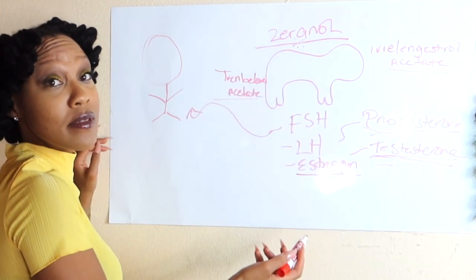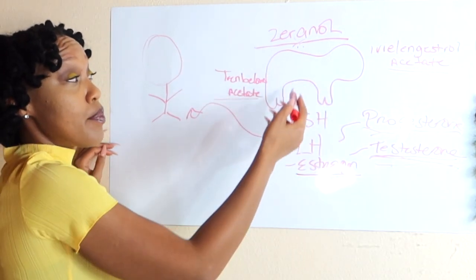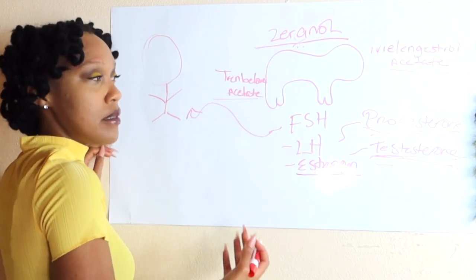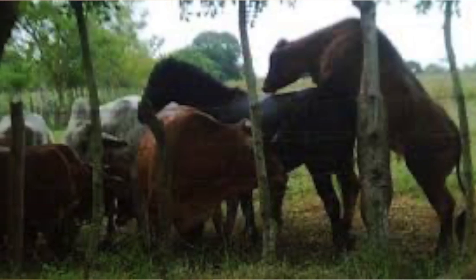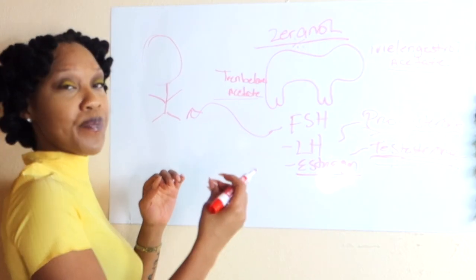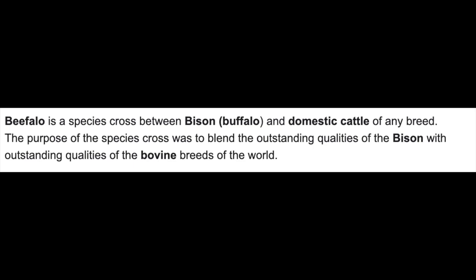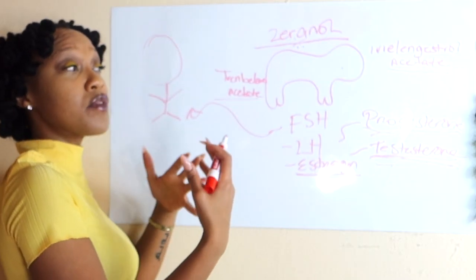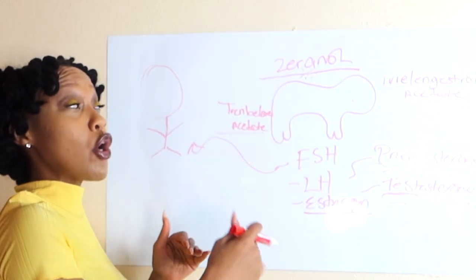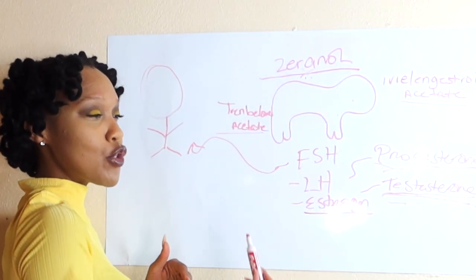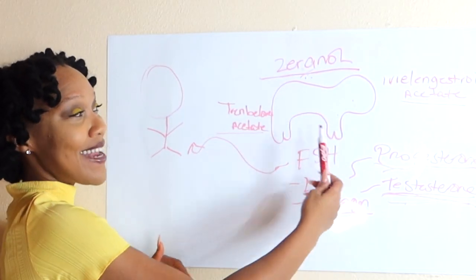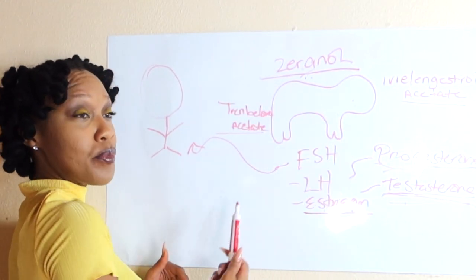They cross-breed these animals. They impregnate a cow from different animals. You don't really even know what these animals are being cross-bred with. Honestly, beef, according to studies, has been cross-bred with a cow and a buffalo. This is where you get beef. So a lot of people like ground beef and all of these other forms of beef. So not only are you consuming the hormones from a cow, you're also consuming the hormones from the next animal that this cow has been cross-bred with.